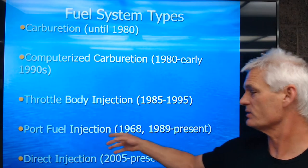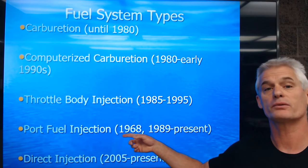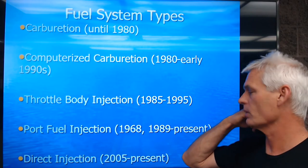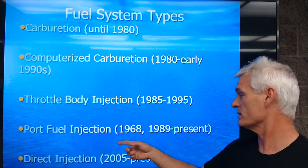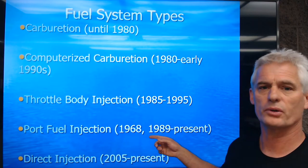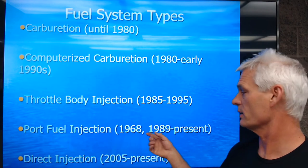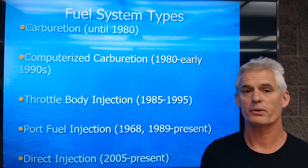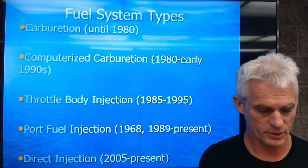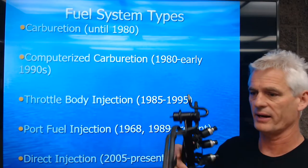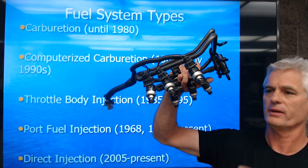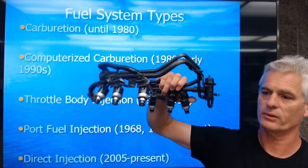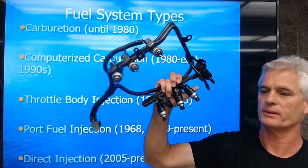Starting in 1968, early Volkswagen Squarebacks had an electronic speed density system — what we call electronic port fuel injection. But most everybody else didn't join the PFI or port fuel injection club until about 1989. General Motors was one of the first, and then everybody joined. Here's a port fuel injection — PFI — system where you have an individual injector for each cylinder. There are six, so this is for a six-cylinder Buick 3.8 liter used throughout the 80s and 90s.